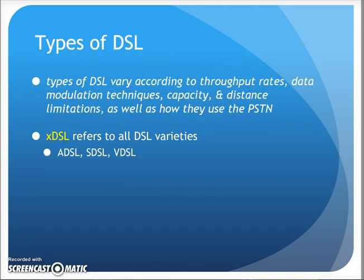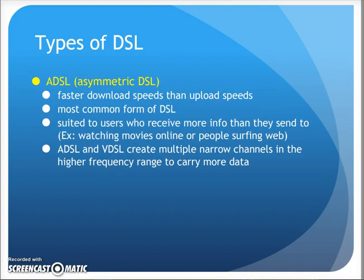There are different types of DSL that vary according to throughput rates, data modulation, and other factors. Overall, we refer to them as xDSL, where X is the variable. So you have ADSL, SDSL, VDSL — they all fall under the umbrella term of xDSL.